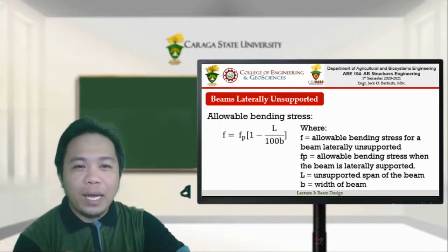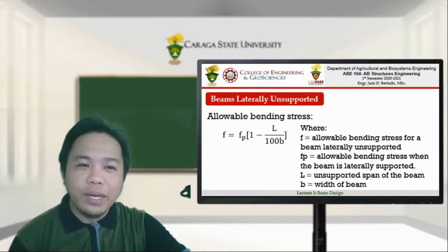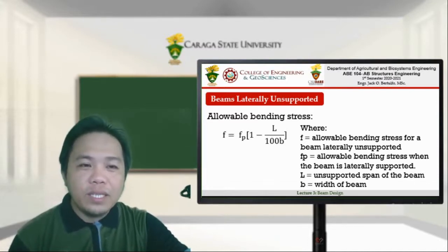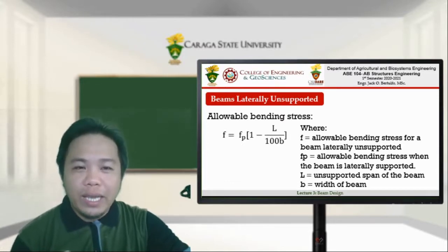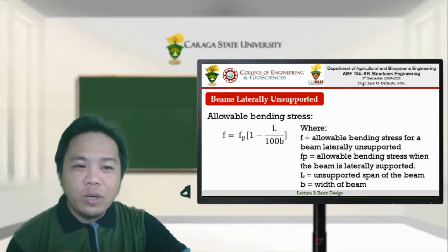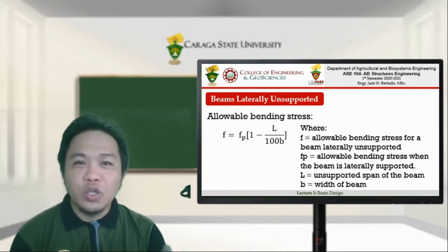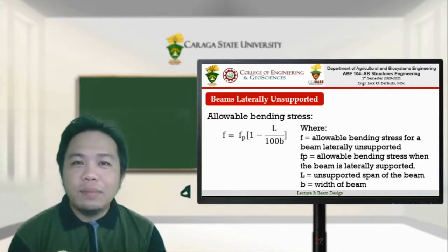To adjust the allowable bending stress, we use this formula: f is equal to fp multiplied by the quantity of one minus l divided by 100 multiplied by b. Here, f is the allowable bending stress for a beam that is laterally unsupported, fp is the allowable bending stress when the beam is laterally supported, l is the unsupported span of the beam, and b is the width of the beam.